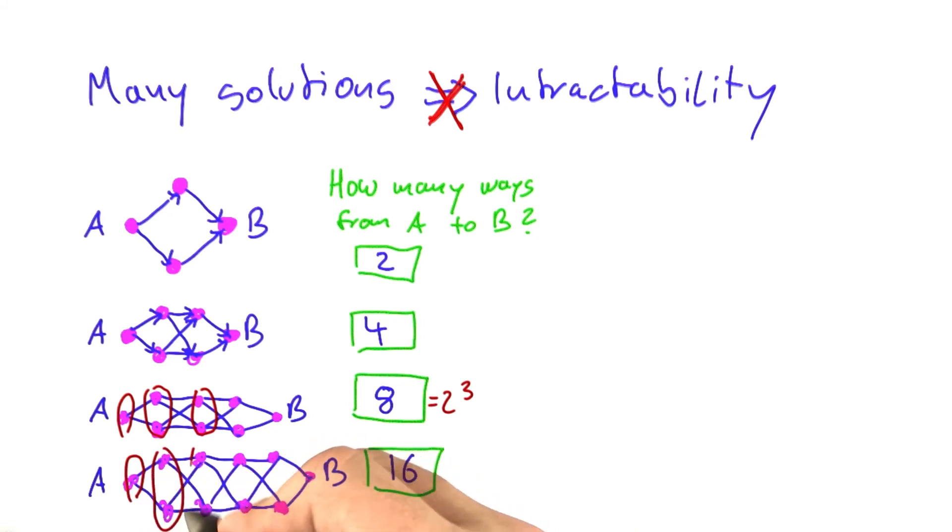it's basically the same thing. We just have one more of these layers here where we can make a choice. And so that's going to be two to the power of four or 16.